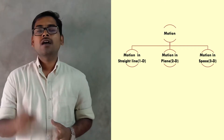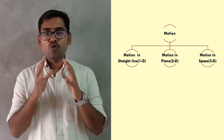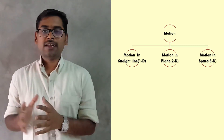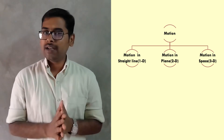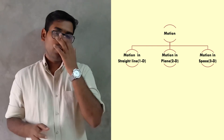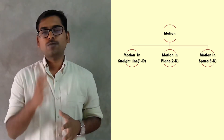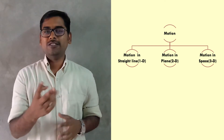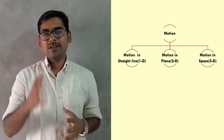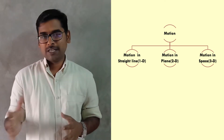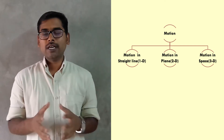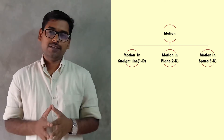All the different kinds of motion that we see around us can be classified into three categories: number one, motion in a straight line, also known as motion in one dimension; number two, motion in a plane, also known as motion in two dimensions; and number three, motion in space, also known as motion in three dimensions.